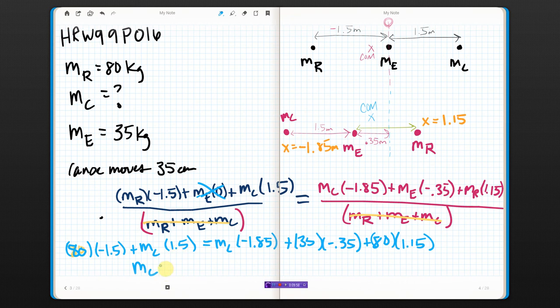And I'm going to get the mass of Carmelita times... I've got 1.5 over here. I've got negative 1.85 on the other side. To move this to the left, I'm going to have to add it. I am going to get a calculator out. Hang on. So, 1.5 plus 1.85 is 3.35. 3.35. Okay.